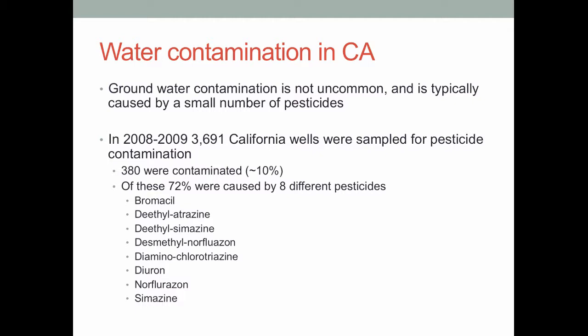As far as groundwater contamination in California is concerned, it's fairly common, but the general trend is that it tends to be caused by a very small number of pesticides — those with high solubility, long half-lives, and low adsorption. This was borne out in a 2008 study where they sampled about 3,700 wells in California and tested them for pesticide contamination. About 10% of total wells were found to have high levels of contamination, and of these, the majority — almost three quarters — were contaminated by just 8 pesticides. By avoiding these particular chemistries, you can really reduce your chances of groundwater contamination.